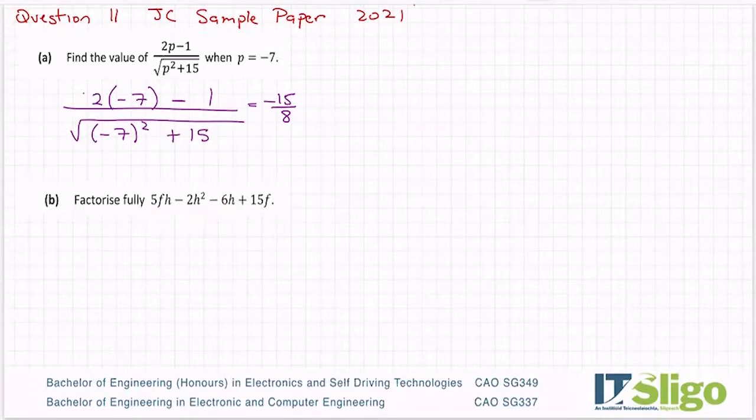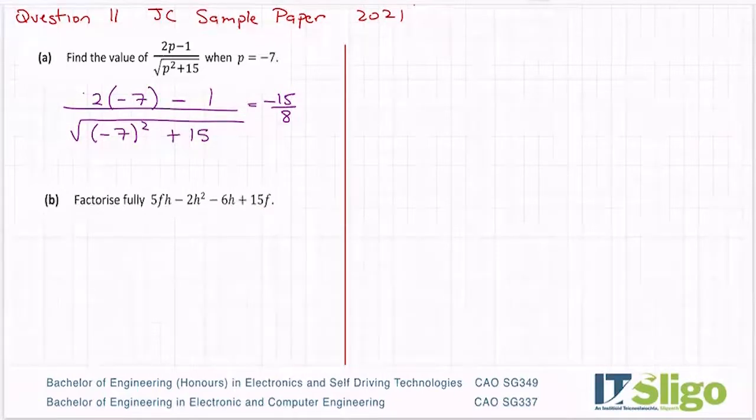Does it matter what pairs you take? No, it doesn't. So I'm going to do it a couple of ways just to show you what happens when people take different pairs. At the start, I'm going to just pair that one with that one and that one with that one. And then after that, I'm going to pair the 5FH with the 15F and then the two in the middle together. So if you've done it a different way from me, hold your horses before you change anything. Let me do it both ways and show you how it doesn't matter.